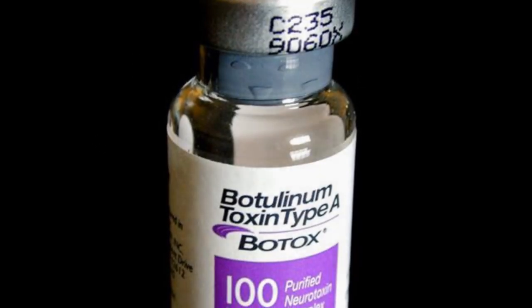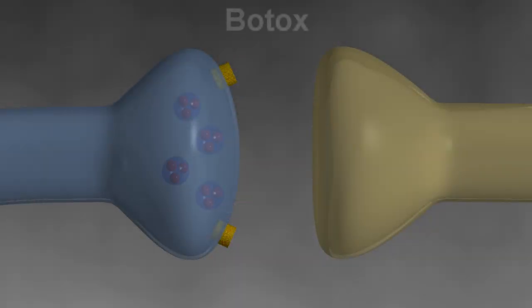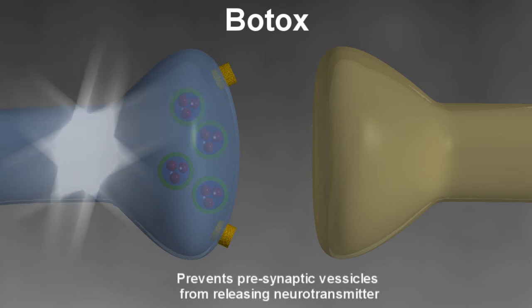Botulinum toxin or Botox works by preventing the chemical containing vesicles in the presynaptic cleft from fusing with the axon membrane and degranulating when a sufficient electrical signal is present, resulting in the characteristic paralysis associated with this agent.